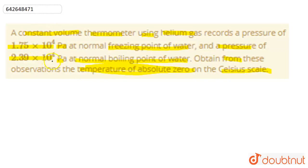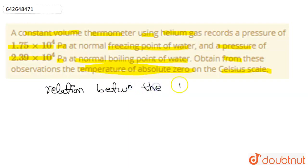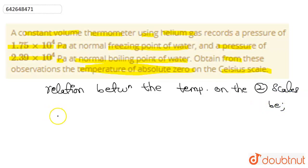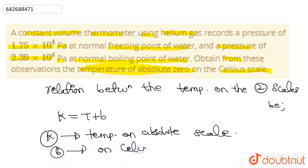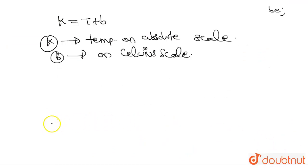So, the relation between the temperature on the two scales: K is equals to T plus B, where K is the temperature on the absolute scale and B is the temperature on the Celsius scale. Now, let's consider if the temperature on the absolute scale is equals to zero.